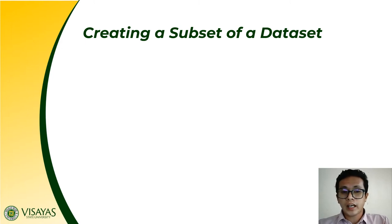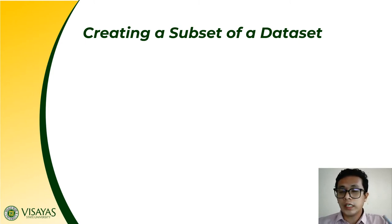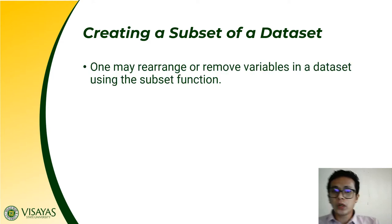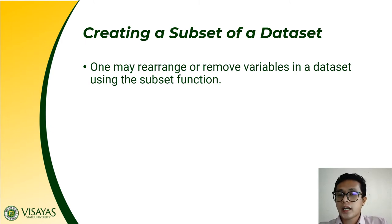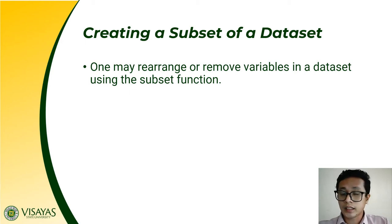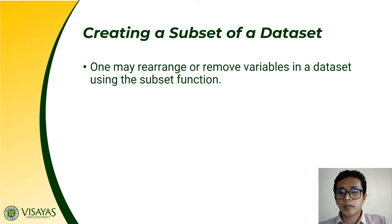Normally, when you import a dataset in R, all column classes are treated as characters. We need to convert them to numeric so we can perform data analysis. You can also rearrange or remove variables in a dataset using the subset function. When we say subset — as known from grade 7 — a subset is just a part of a whole. When you create a subset of a dataset, you are creating a smaller dataset from the given dataset, using the subset function. This subset function can also be used to rearrange or remove variables.